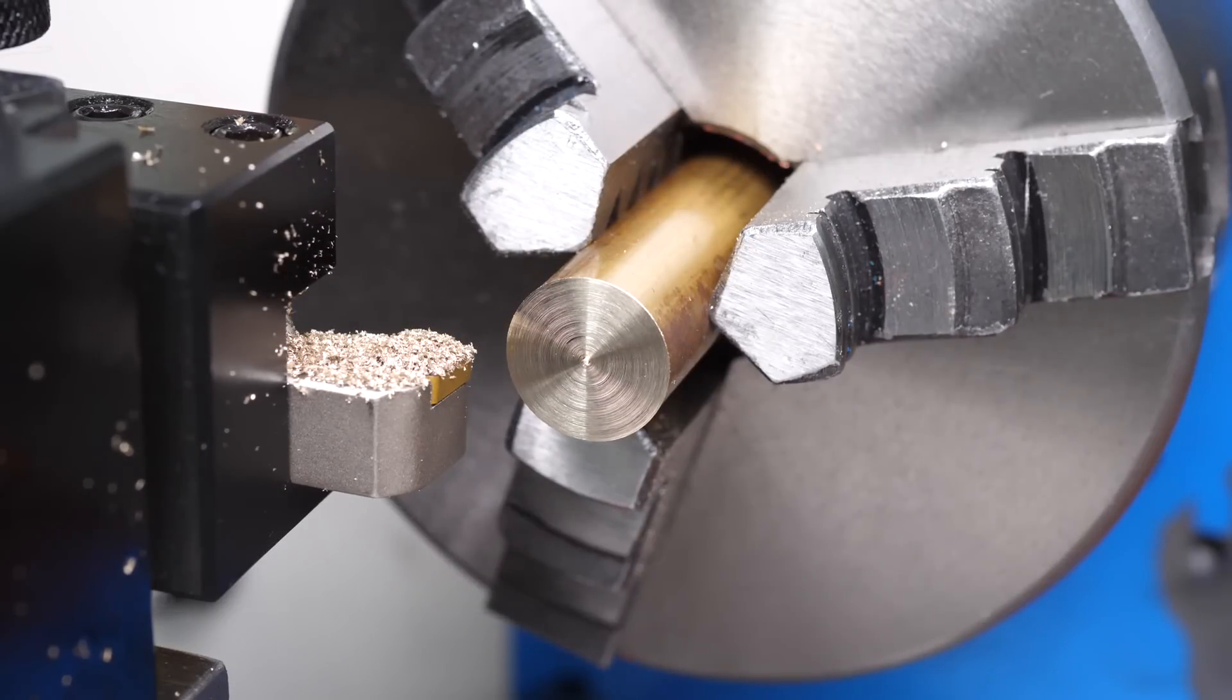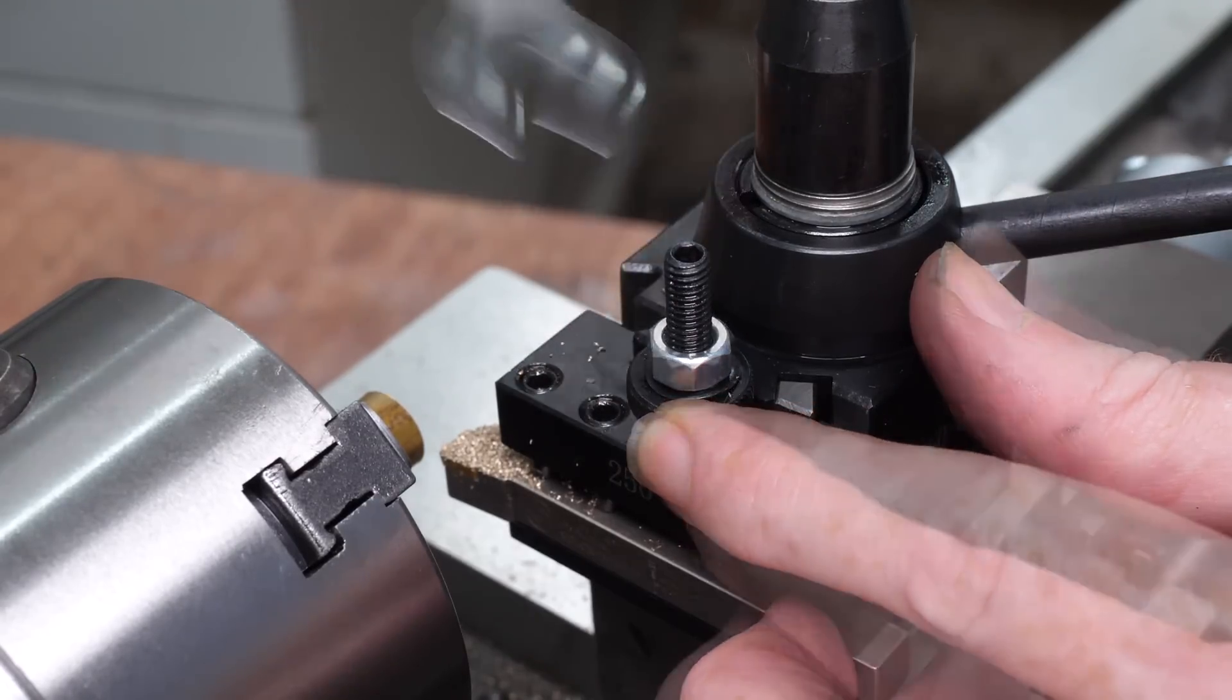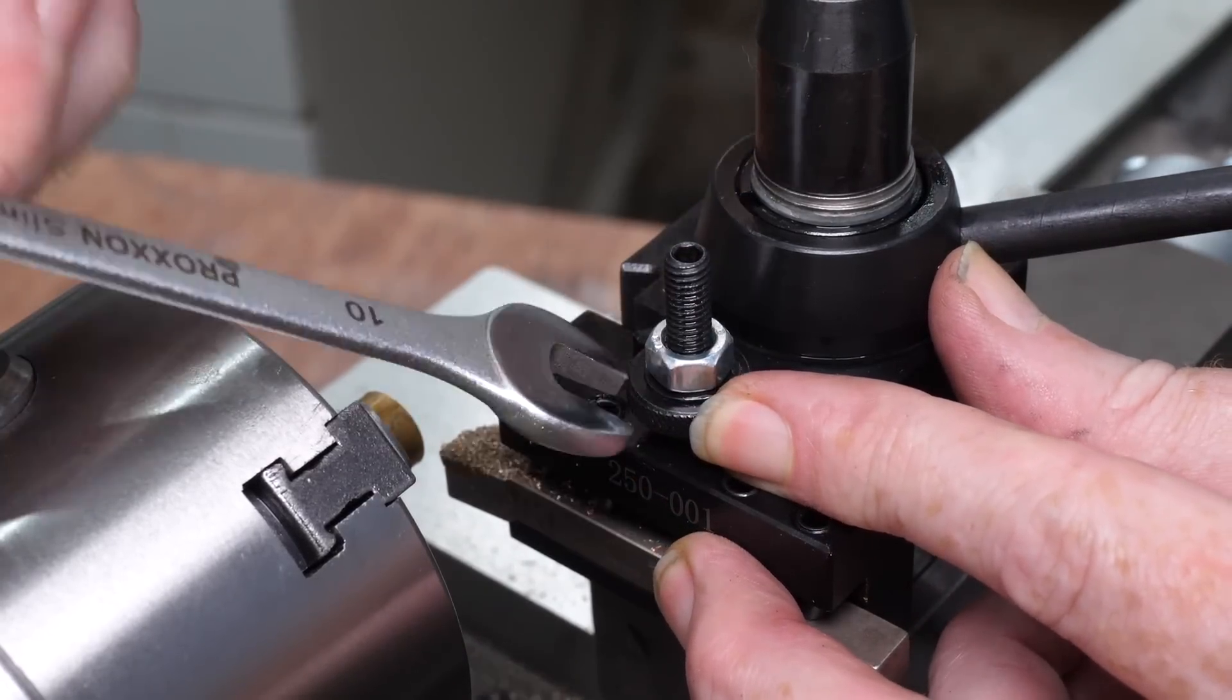Let's see how close it is to the same height once it's been removed and replaced. To ensure the holder works correctly, I need to lock the height adjustment wheel into position.